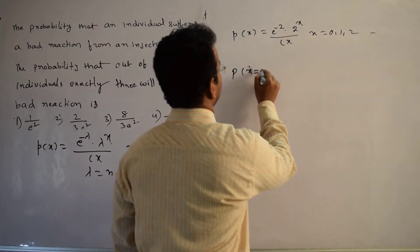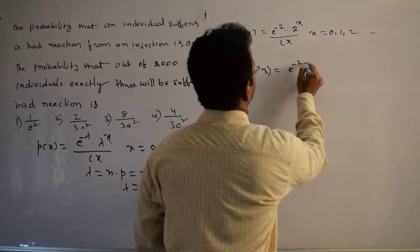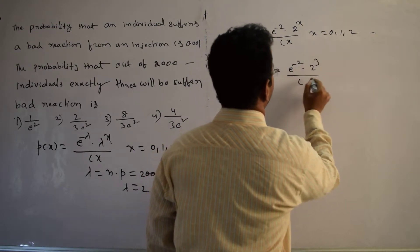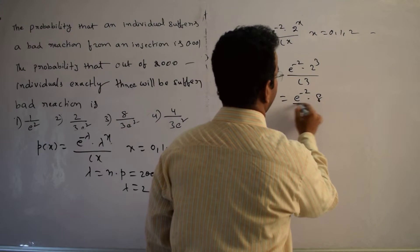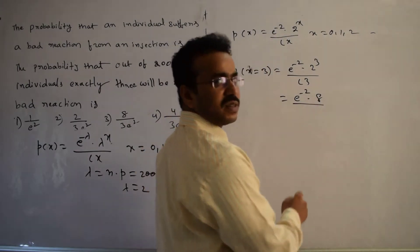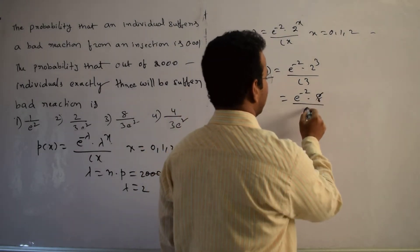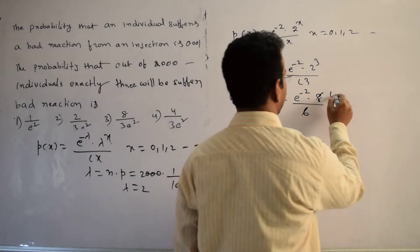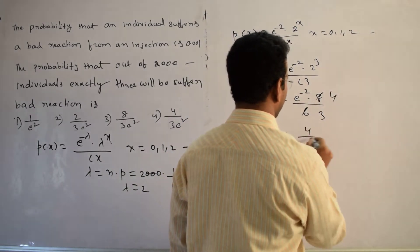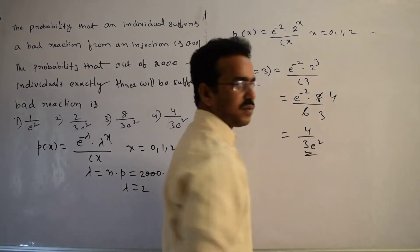You can write x equals 3. Here, e power minus 2 times 2 cube by factorial 3. e power minus 2 times 8 by... 2 cube is 8, factorial 3 means 6. This simplifies to 4 divided by 3, which equals 4 by 3 e square. This is the required probability.